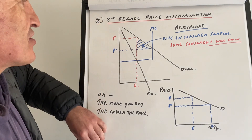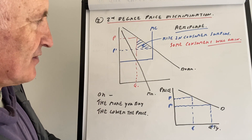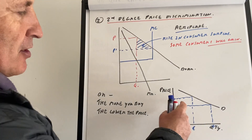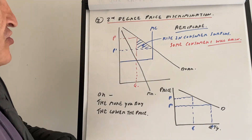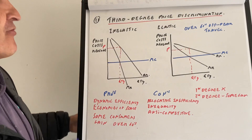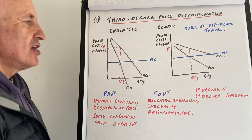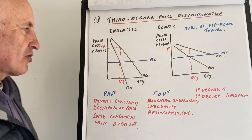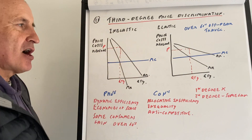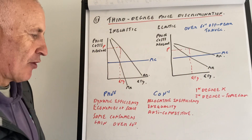We are charging different prices to different consumers. In this case, the consumer gains, and if the consumer buys a lot of goods, they also gain. Third degree price discrimination is where you separate the markets, with different elasticity in each market. With inelastic demand you can charge a higher price; with more elastic demand you charge a lower price.